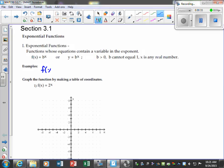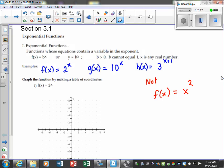If I have f of x is equal to 2 to the x, that's an exponential function. Let's look at another one, g of x is equal to 10 to the x, or a third example would be 3 to the x plus 1, because all of these still have a variable in the exponent position. One in particular that's not, would be f of x is equal to x squared, and that's because the variable is not in the exponent position. So to give you just a few examples of exponential functions, and one in particular that's not.